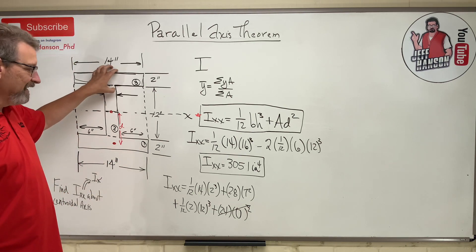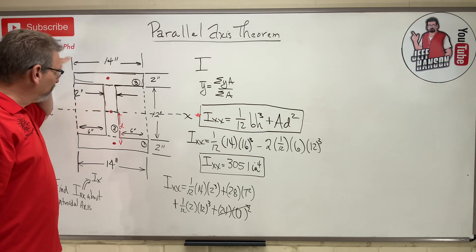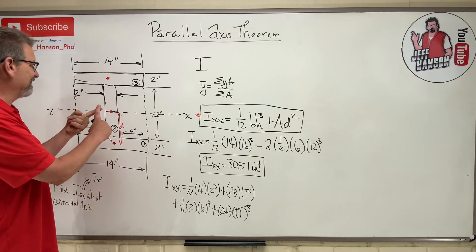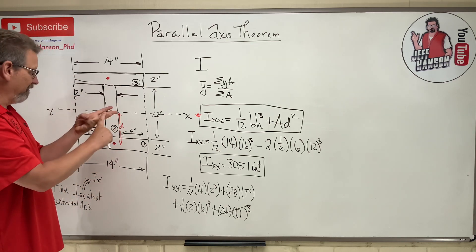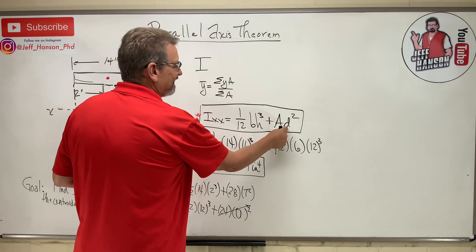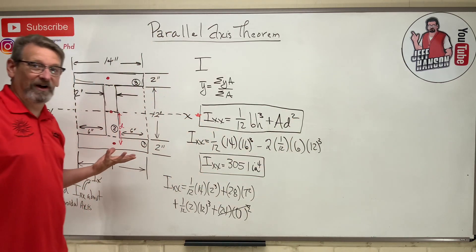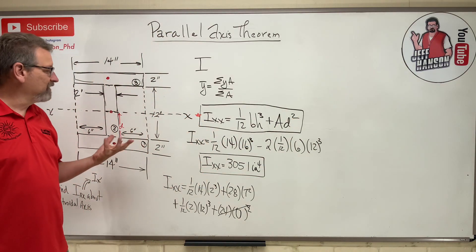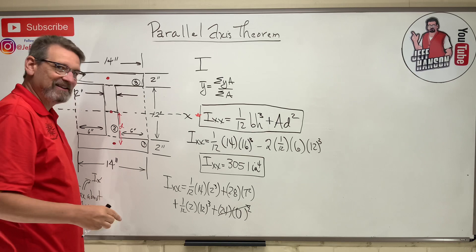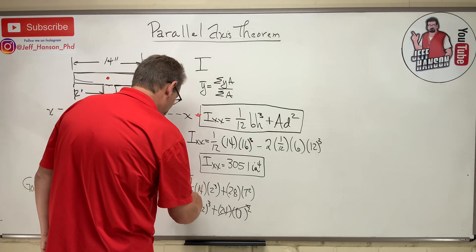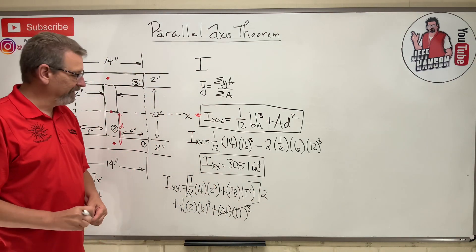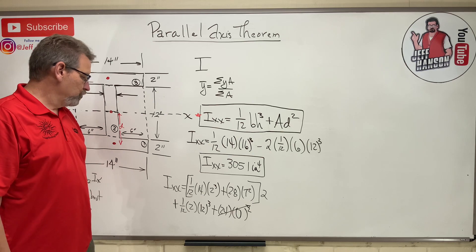And then the last part is piece number three up here. How is piece number three different than piece number one? Well, let's see. The base is the same. The height is the same. The area is the same. Oh, this one's negative distance. That one's positive distance. But wait a minute. What do we do with the distance anyway? We're squaring it. So what? It's going to be positive anyway. So the distance is always an absolute value. It's the exact same thing. This shape and that shape are the exact same thing. So look at this. Ready? Boom. I'm going to put a two on there. Multiply that one by two. Two-tums.